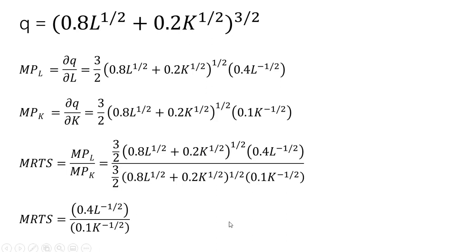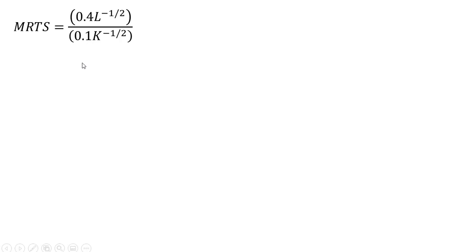After canceling, we've got a few terms left. 0.4 divided by 0.1 leaves us with 4 in the numerator. Following the rules of exponents, we move L to the -1/2 power down to the denominator, and move what's in the denominator up to the numerator.